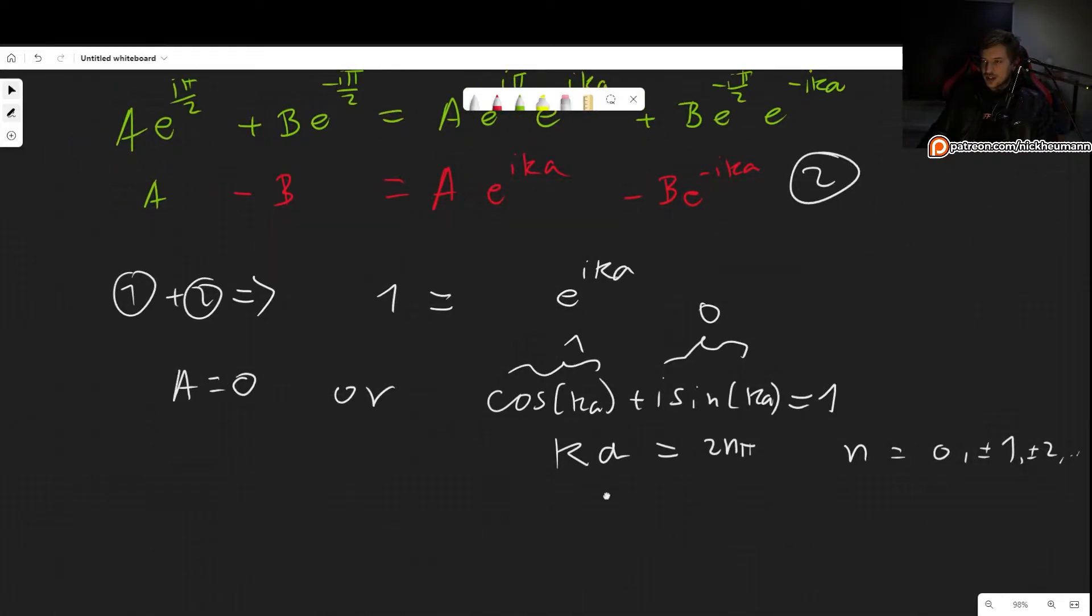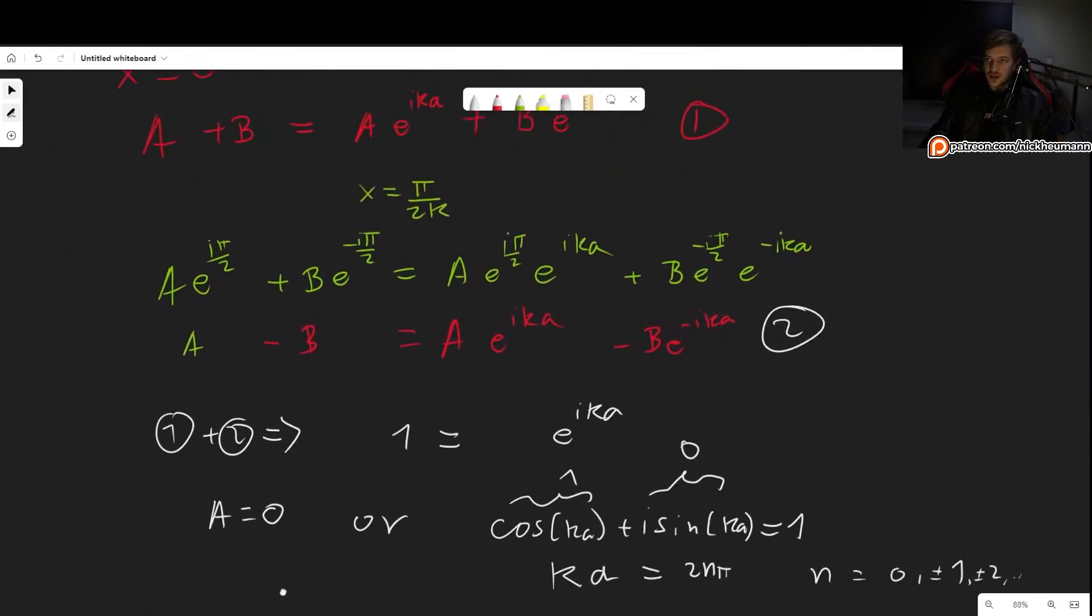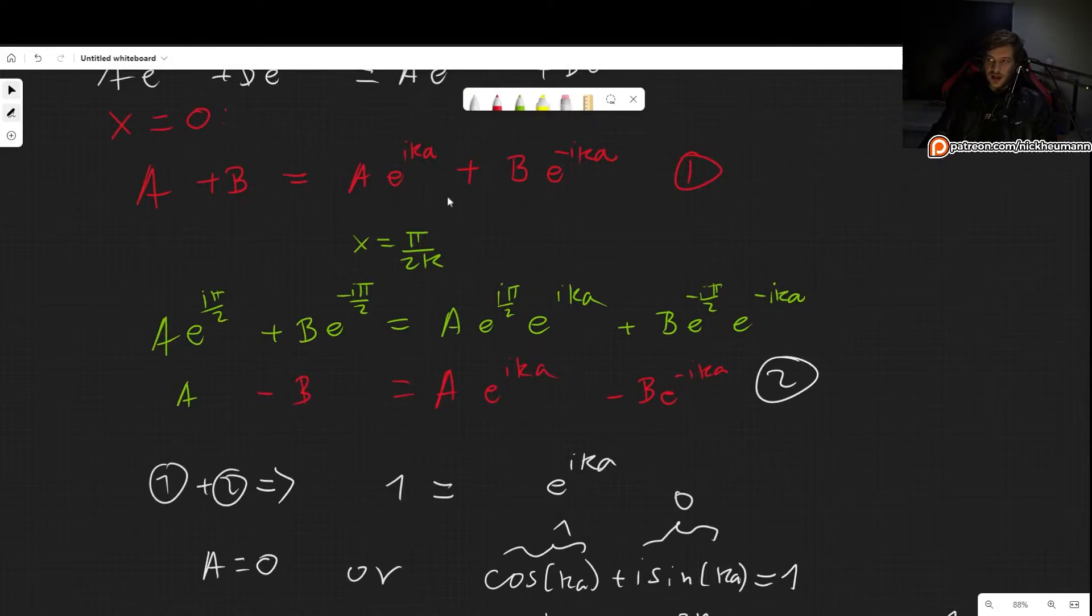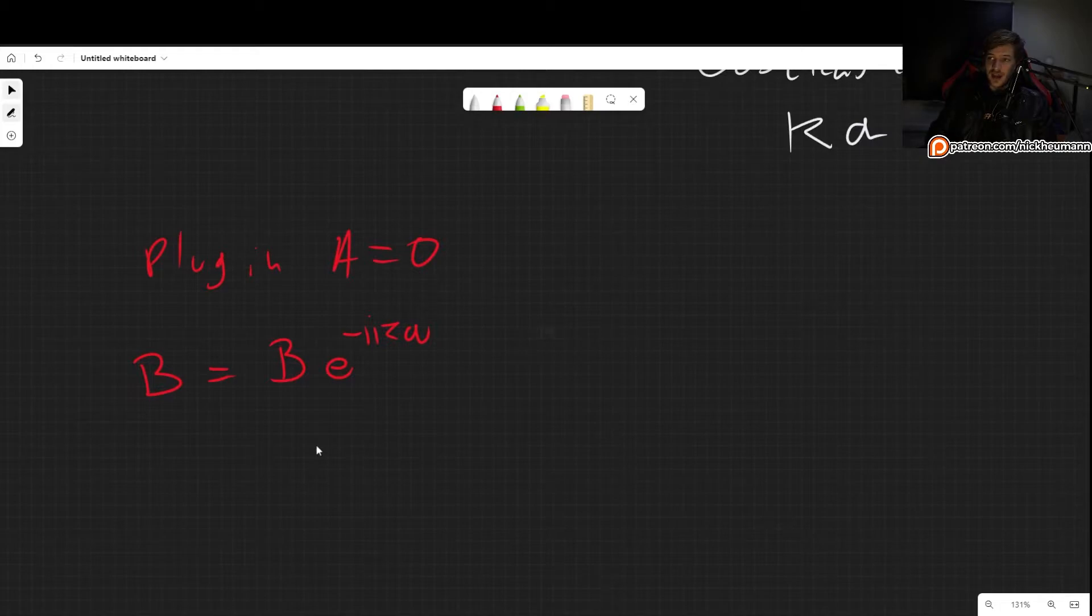These are our conditions, but notice that these are two different situations. If A equals 0, we can simply plug it into any of these equations, but the first one may be a bit simpler. Plugging A equals 0, we get that B has to equal Be^(-ika). So if A equals 0, then we get this equation. But notice that this tells us that either B equals 0, but in that case both B and A would equal 0, and we wouldn't have a wave function, so we can't really choose this at this moment.